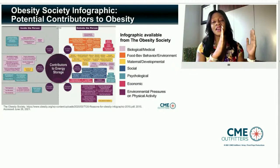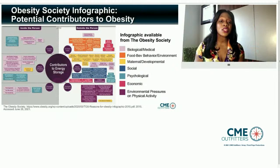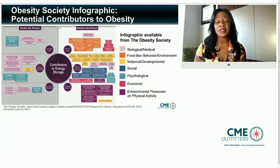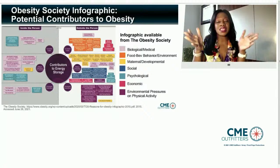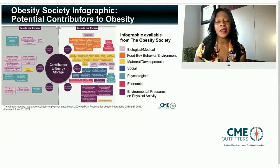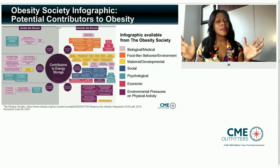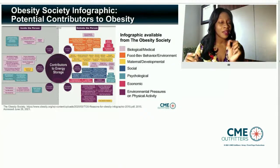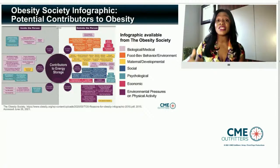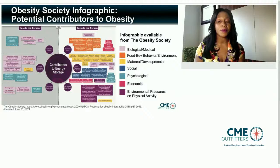On the left side in gray, we see factors inside an individual that might lead to obesity. On the right side, things outside the individual. At the top, things that increase your intake; at the bottom, things that decrease how much you're able to burn; in the middle, things that affect either intake or expenditure — and in very small print, it says 'unknown.' We recognize that there are things we don't yet know about this disease, and we're continuing to learn every day.